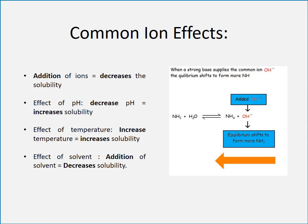The common ion effect states that the addition of ions decreases solubility. When a strong base supplies the common ion OH⁻, the equilibrium shifts to form more NH, decreasing solubility. The effect of pH: a decrease in pH causes an increase in solubility. The effect of temperature: increasing temperature also increases solubility. The effect of solvent: adding more solvent decreases solubility.